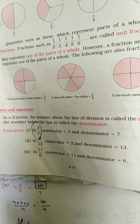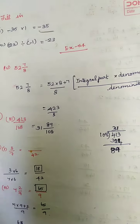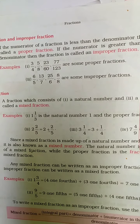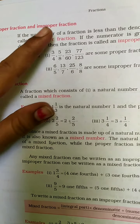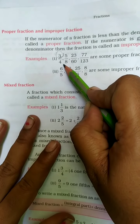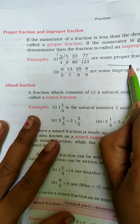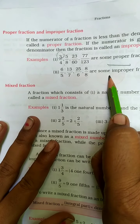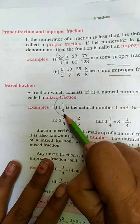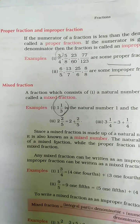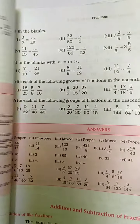For example, 3 by 7: 3 is the numerator and 7 is the denominator. Types of fraction: proper fraction, improper fraction. When the numerator is smaller than the denominator it is a proper fraction. When the numerator is bigger than the denominator it is an improper fraction. A whole number together with a fraction we call a mixed fraction. These are the important things you have to remember.